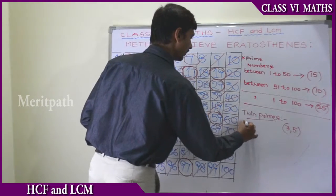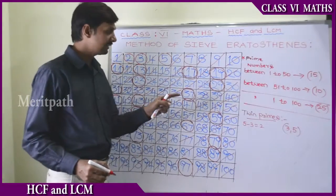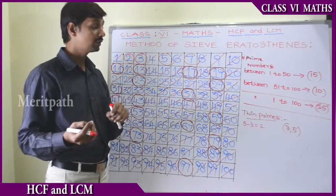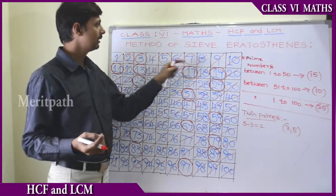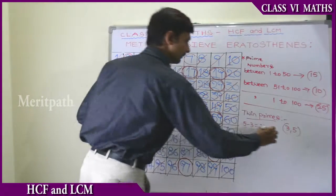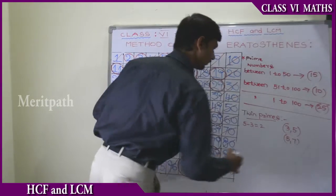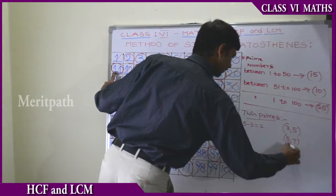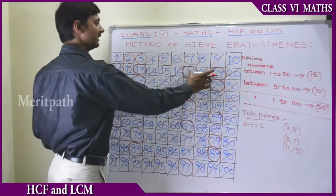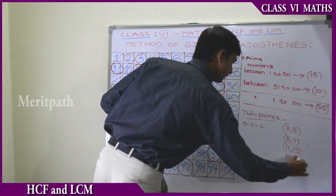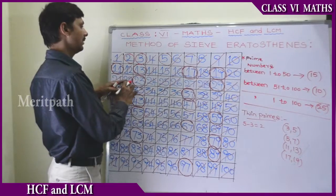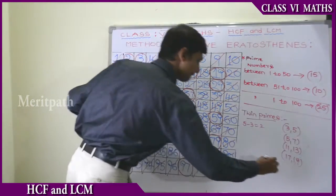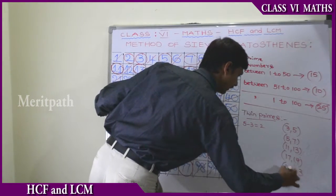So we subtract the smaller number from the greater number and we get 2. Similarly, after 3 and 5, we have 5 and 7 — so 5 and 7 are twin primes. And 11 and 13 are twin primes. And after that, 17 and 19 are twin primes.